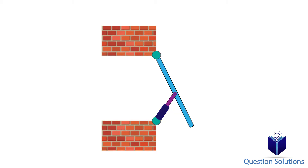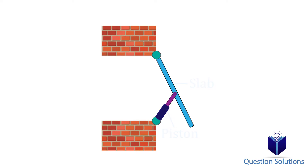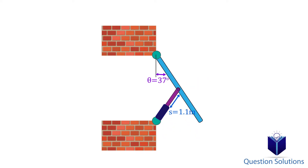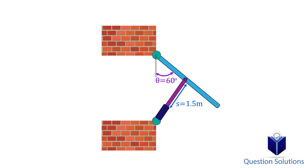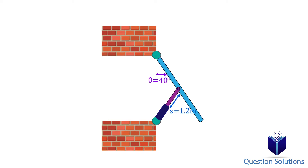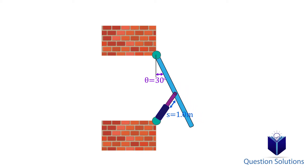Imagine a system like this. We have a hydraulic piston that's holding onto a slab. The goal in this chapter is to find a way to relate the angle that's changing when the length of the piston is also changing. So for the slab, it's going through rotational movement while the piston is going through translational movement.